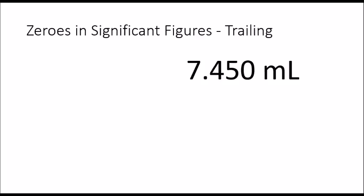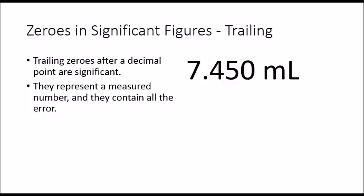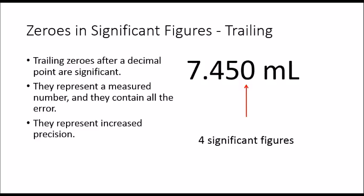Now there can be trailing zeros after a decimal point. Trailing zeros after a decimal point are significant. They represent something that has been measured and contain all the error. They also show that there is increased precision in that number. So that zero contains all the error for our measurement. As a result, there are 4 significant figures in that number.